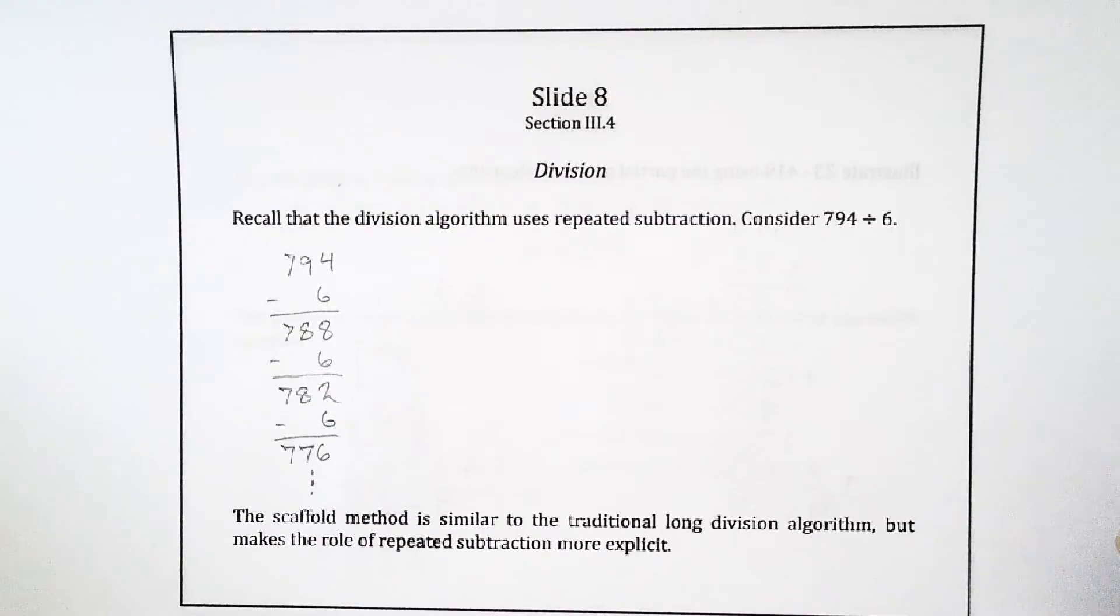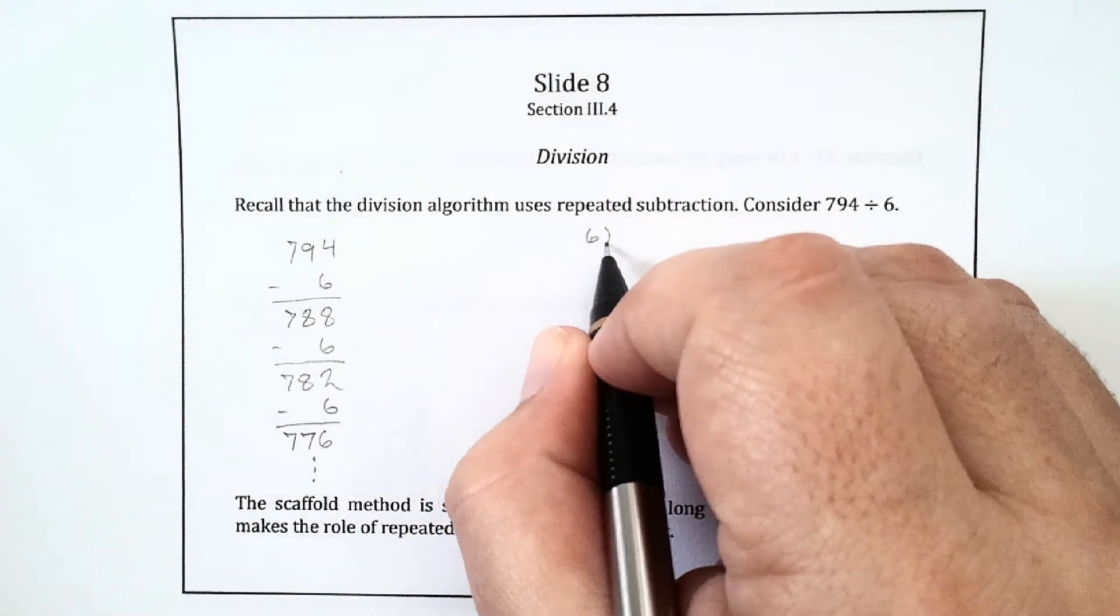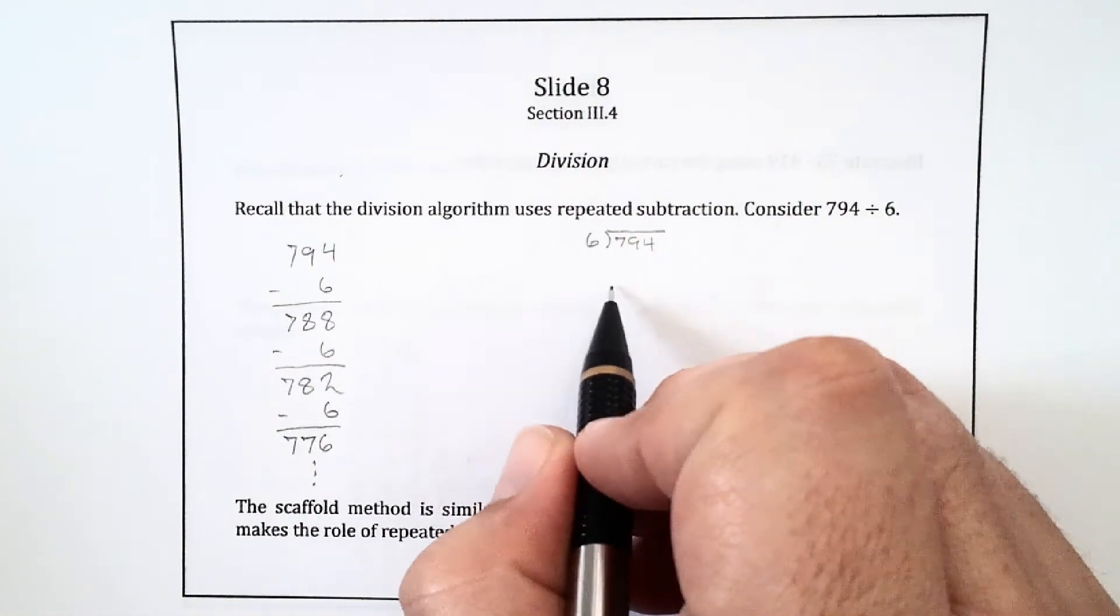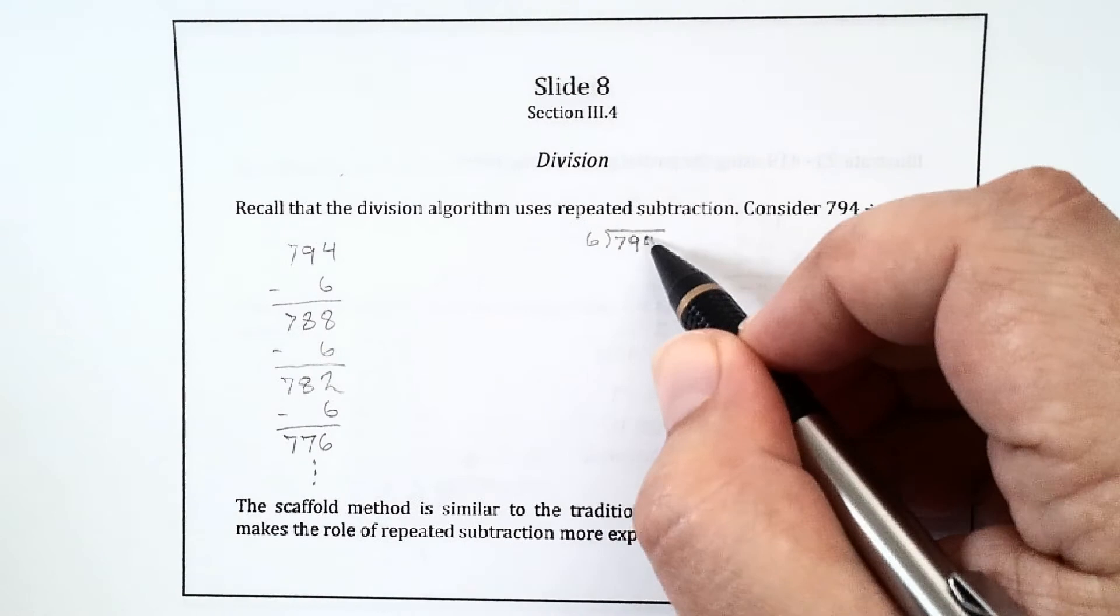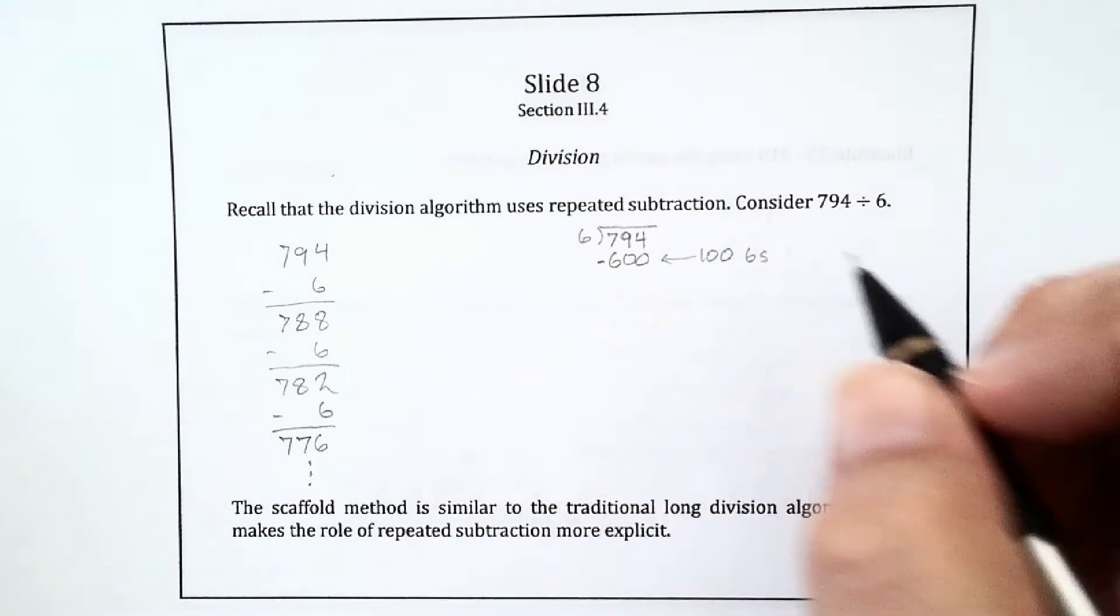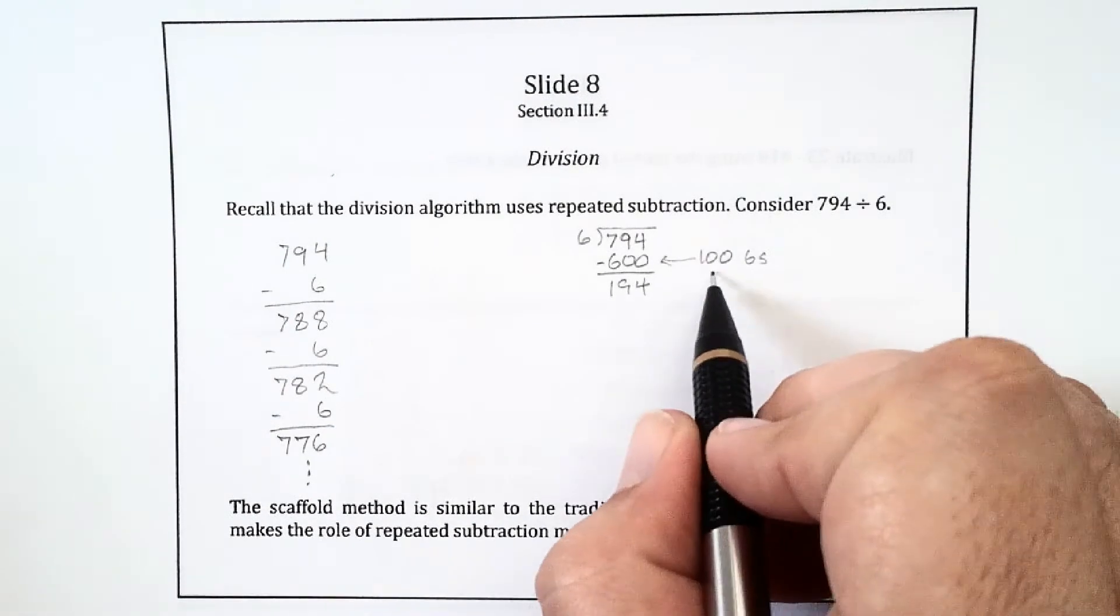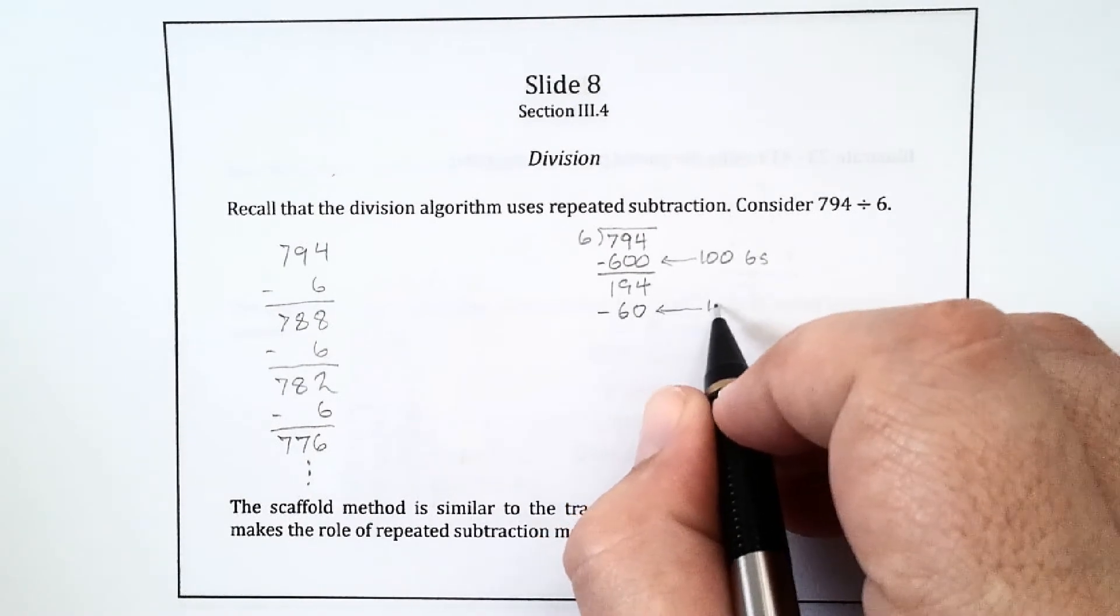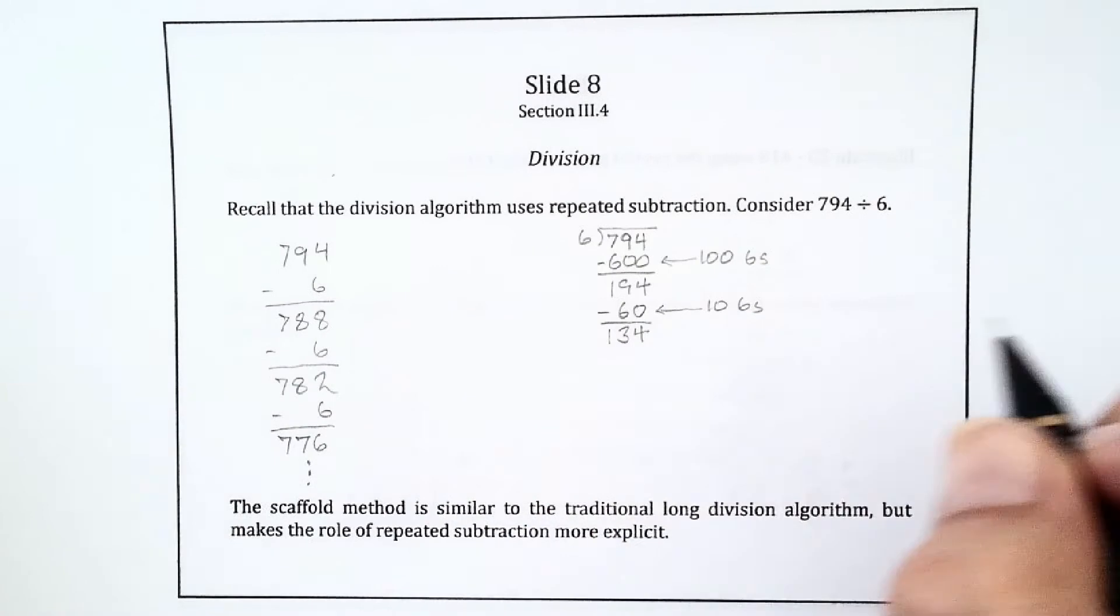A better idea would be to subtract a bunch of 6s all at once. I'm thinking about dividing 6 into 794. I'm going to write it kind of how we traditionally do, but I'm going to just subtract groups of 6s. Instead of subtracting a single 6, why don't we subtract 100 6s all at once? That means we're going to subtract 600, which is 100 6s, and that leaves me with 194. I can't take away another 100 6s, but I could take away 10 6s. That would be taking away 60, so here we're taking away 10 6s, and that leaves me with 134.